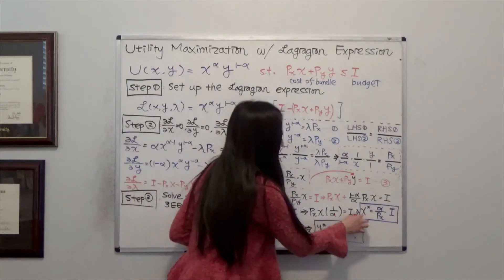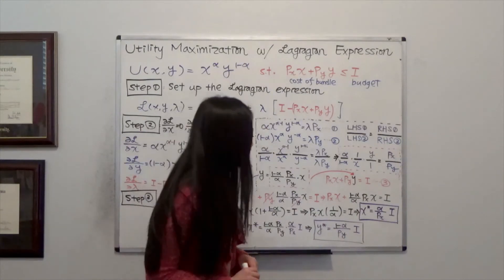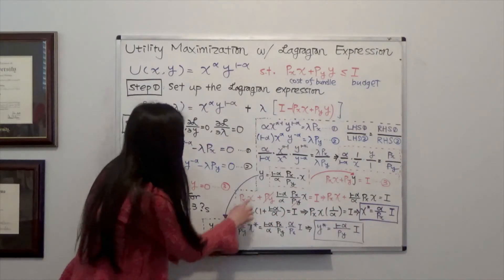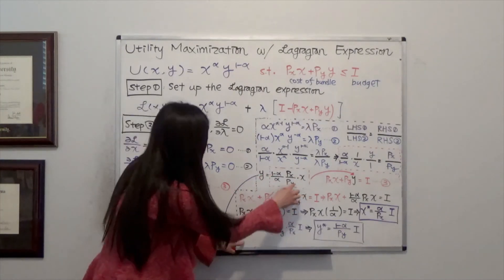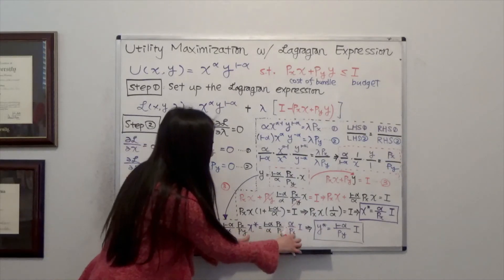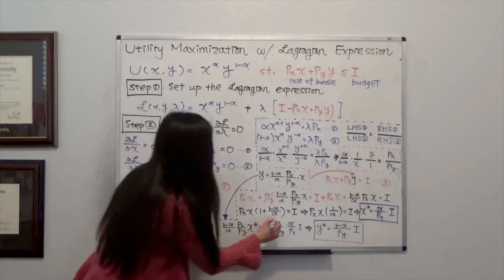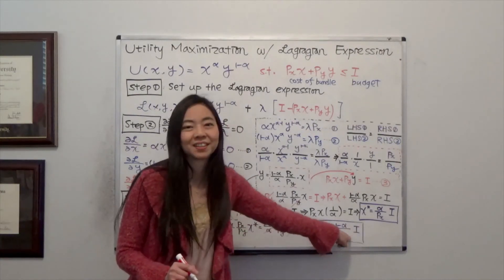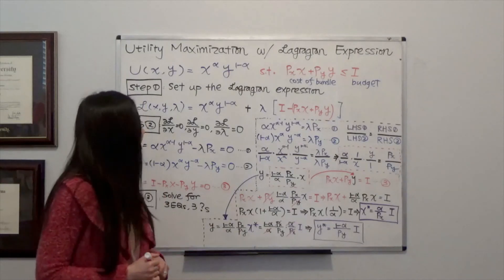Solving for x star: x* equals alpha over p_x times i. Once I find x*, I can solve for y* by plugging x* into y equals 1 minus alpha over alpha times p_x over p_y times x. The alpha and p_x terms cancel, giving y* equals 1 minus alpha over p_y times i. These are the three steps using the Lagrangian expression to solve a utility maximization problem. I hope this helps and I will see you next time.